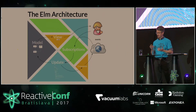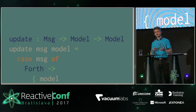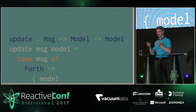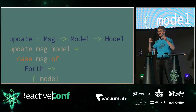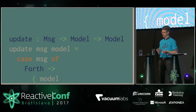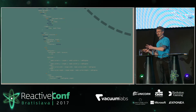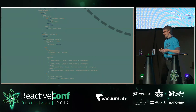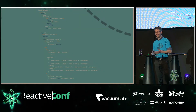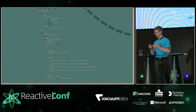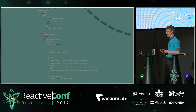The final thing we need to define is the update function. Its signature takes the message coming in and the current model state, and outputs an updated model state. In our update function we evaluate the message: in case of Forth, we pull out the first frame from the list of frames and put it into the transition state. In case of Tick, we check if there is already a transition going on, update the progress value, and finally update the current frame by applying some math with the new progress value.